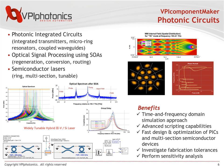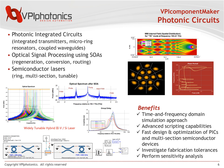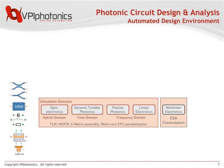Our answer to this question is our product called VPIcomponentMaker Photonic Circuits. It can be used for different types of applications: passive structures, optoelectronic applications, lasers, etc. Here is a design example for a tunable hybrid III-V silicon laser — you see the gain element, the filter element, the cavity — and a very important benefit is that you can do fast design optimization of these devices and also perform tolerance analysis and performance sensitivity analysis.